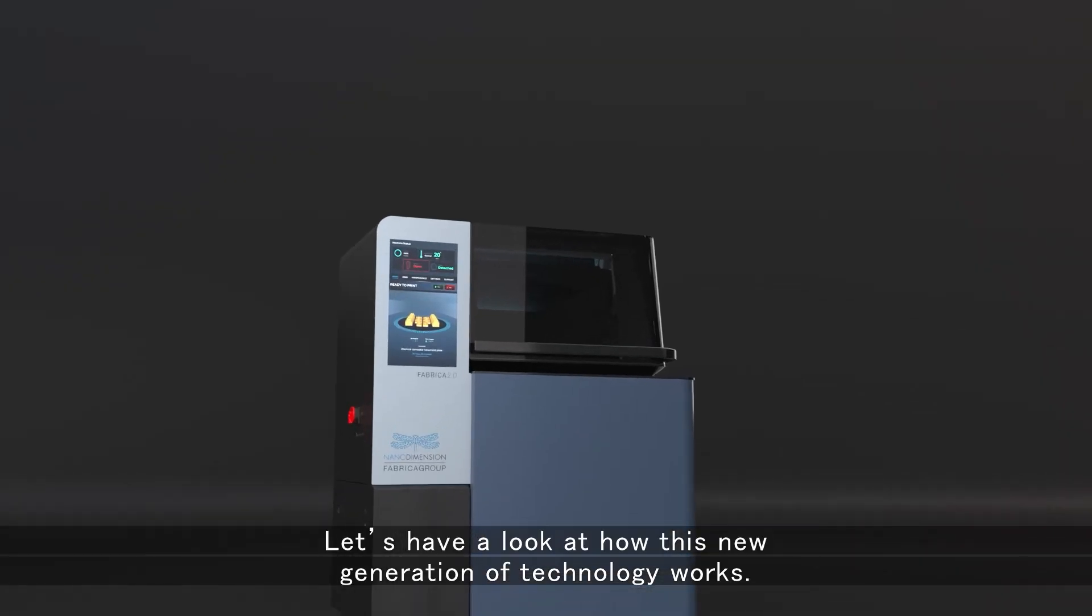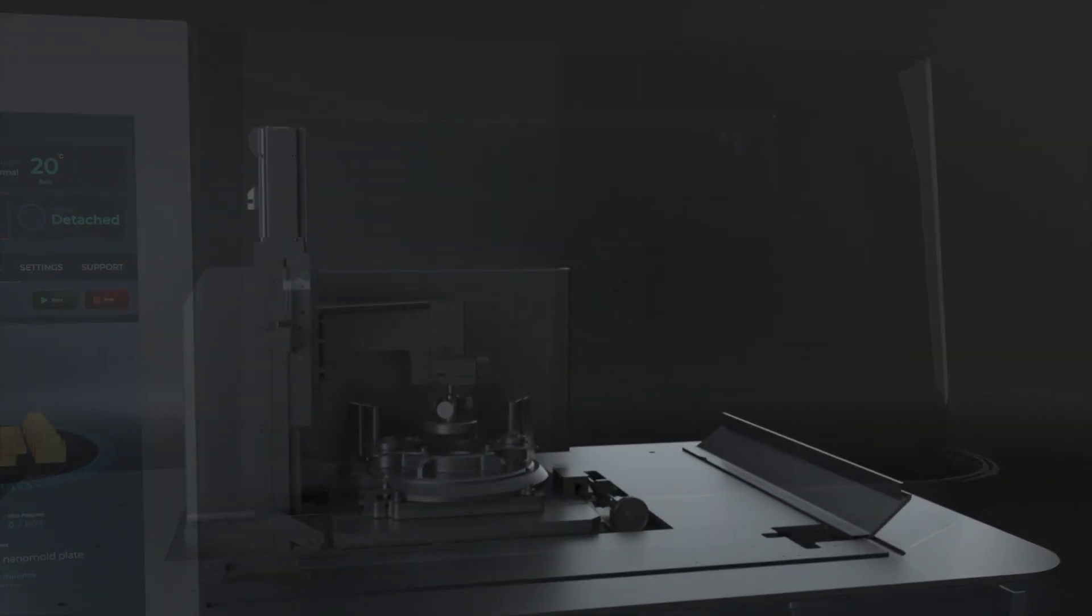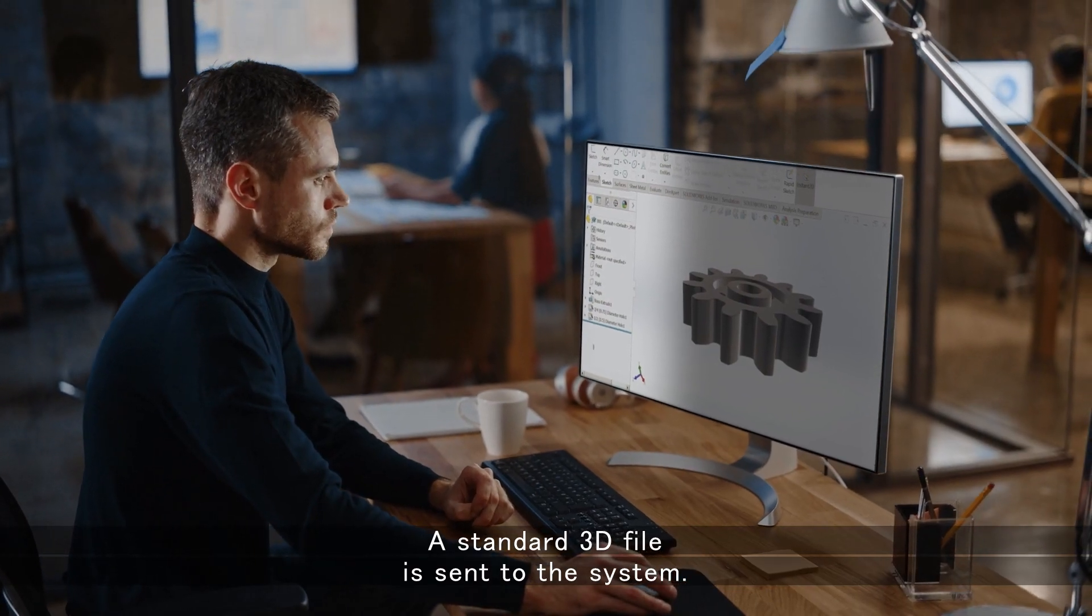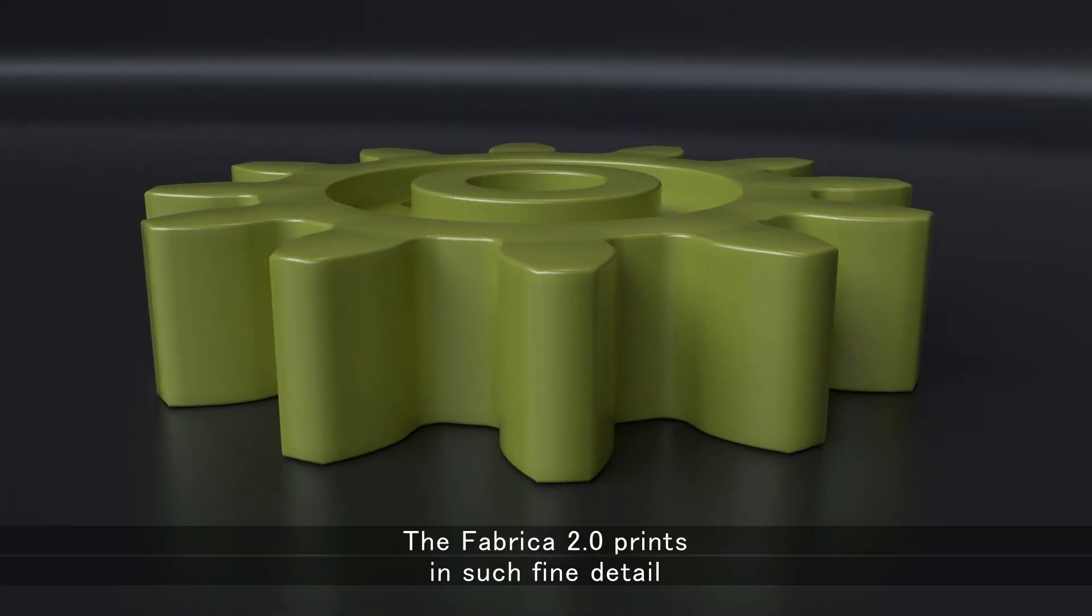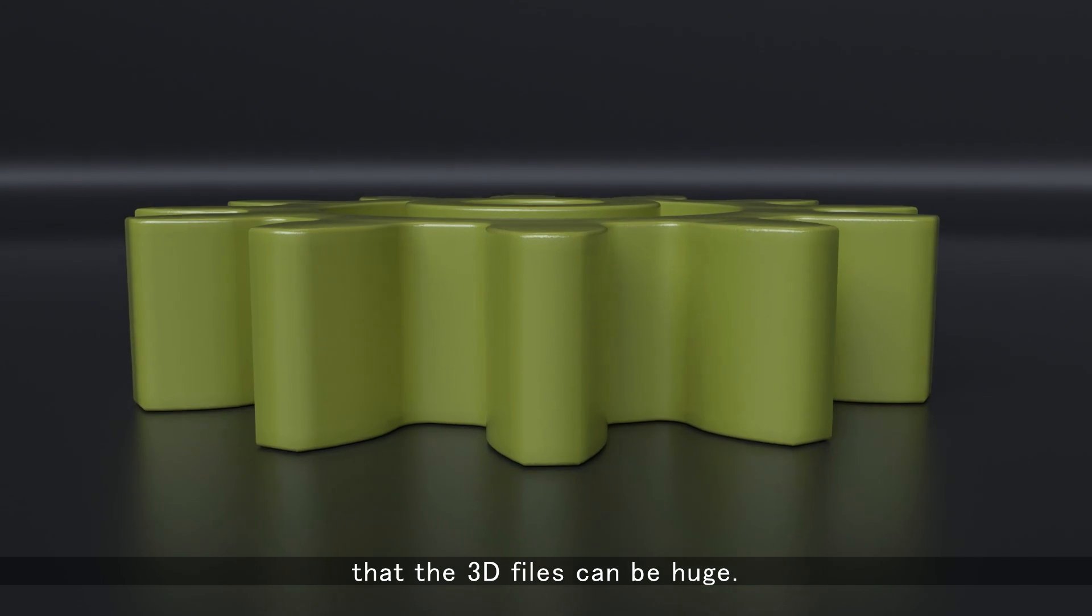Let's have a look at how this new generation of technology works. A standard 3D file is sent to the system. The Fabrica 2.0 prints in such fine detail that the 3D files can be huge.